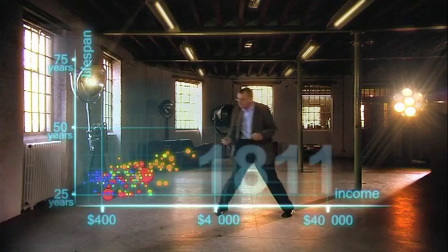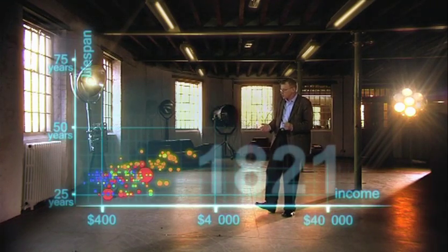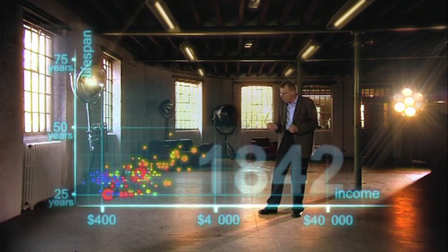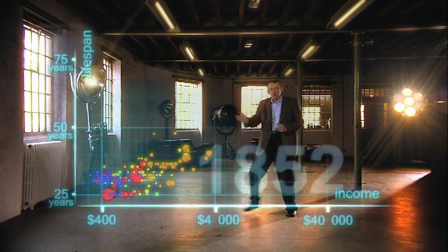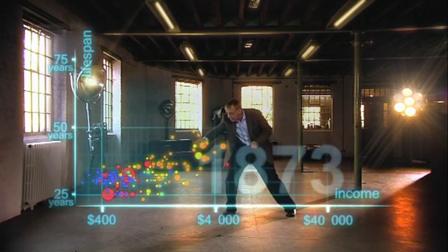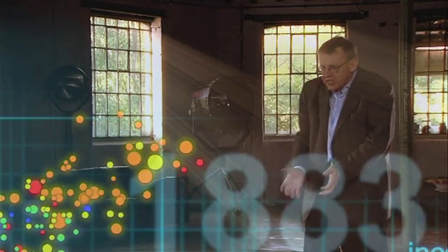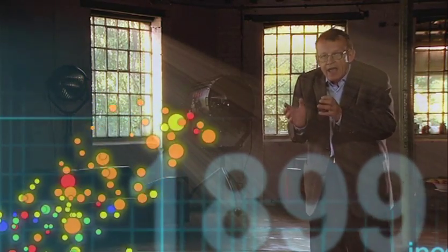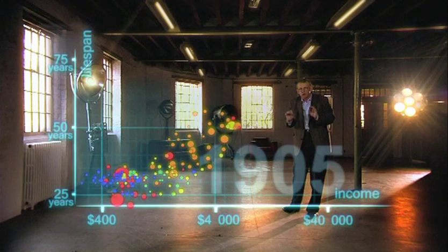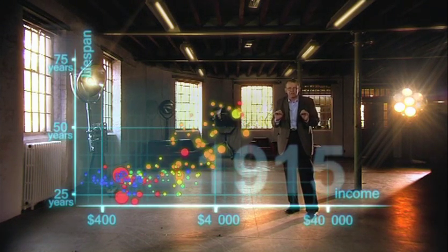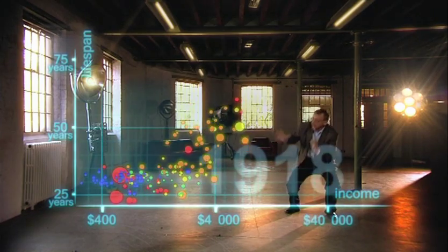And now watch the world. The industrial revolution makes countries in Europe and elsewhere move away from the rest. But the colonized countries in Asia and Africa, they are stuck down there. And eventually the western countries get healthier and healthier. And now we slow down to show the impact of the first world war and the Spanish flu epidemic. What a catastrophe!